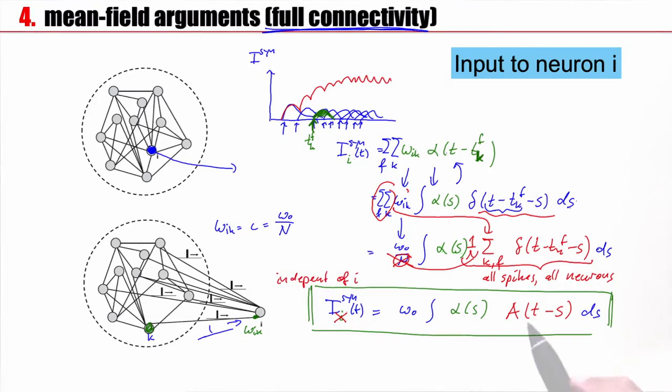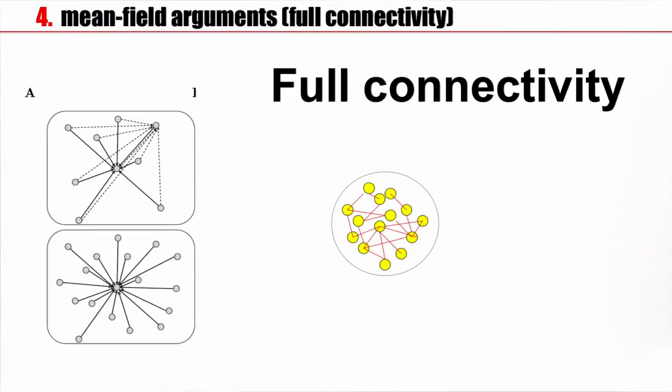Second observation: The input current mainly depends on the population activity. This is the instantaneous population activity filtered with a function alpha. This quantity is like the A bar introduced earlier. The A bar can be defined for arbitrary filters: exponential, Gaussian, square, rectangular. Here we have a natural filter. The filter is the time course of the synaptic input current pulse.